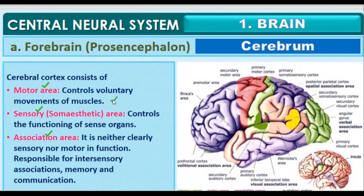There are three regions in the brain: the motor area, the sensory area, and the association area. The motor area controls the voluntary movement of muscles. The sensory area controls the functioning of the sense organs. The association area is neither clearly sensory nor motor in function — it is responsible for inter-sensory association, memory, communication, and voluntary thinking.